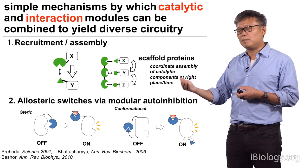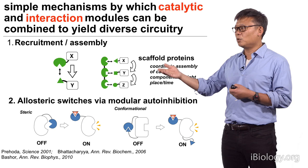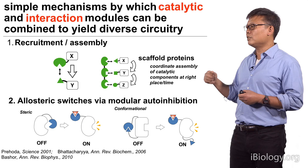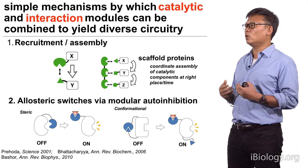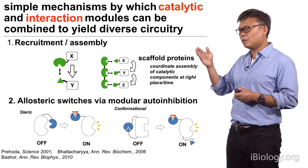The importance of these sorts of recruitment and assembly interactions is really exemplified at the extreme by a class of proteins known as scaffold proteins. These are proteins that have multiple interaction domains and they often bind to multiple signaling proteins — X, Y, and Z shown here. They really help to coordinate a set of catalytic components to be at the right place at the right time, allowing them to interact in a very specific cascade.